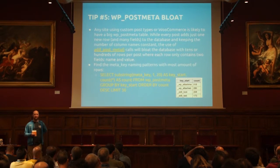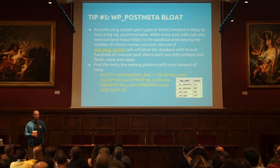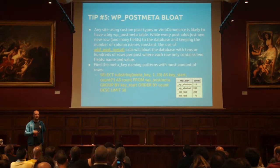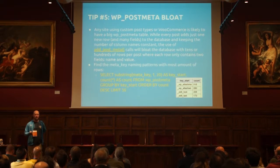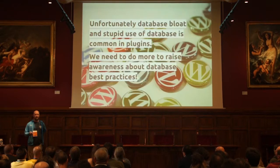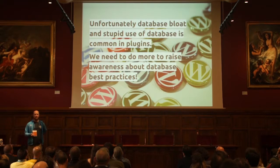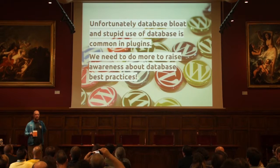Another table that unfortunately often grows big is the wp_postmeta table. Especially if you have WooCommerce installed, it will generate lots and lots of rows. With this command you can find out what type of rows are most common in your wp_postmeta table. Unfortunately, lots of plugins pollute this table, and we need to raise awareness among plugin and theme developers that you can't use the post meta functions too much — because every single time you save something, it generates one new row in the database.